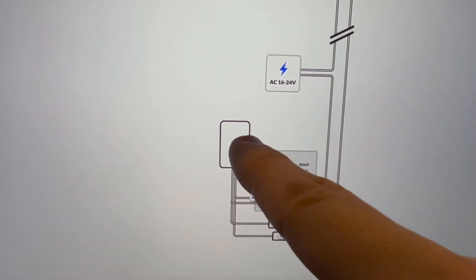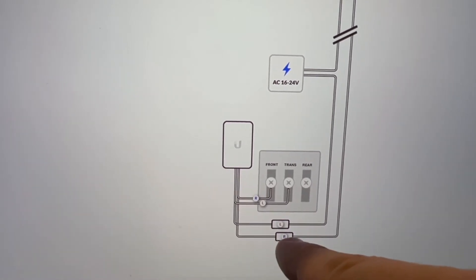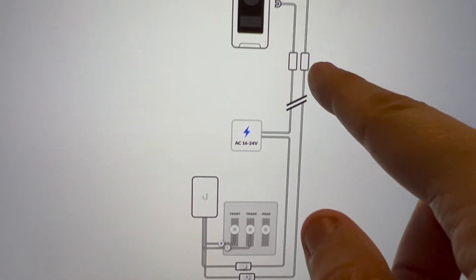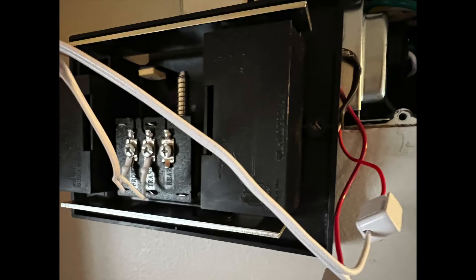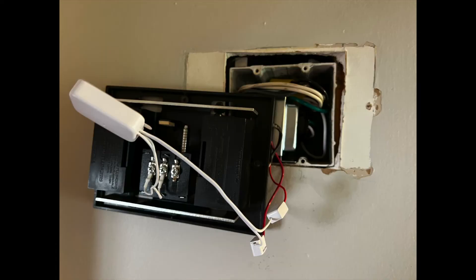And then the right here, this goes from the front, goes into the little box and then comes out to the right and then goes all the way to the doorbell. And then the doorbell goes all the way up to the transformer. So I'll show you pictures of how I did it at home.